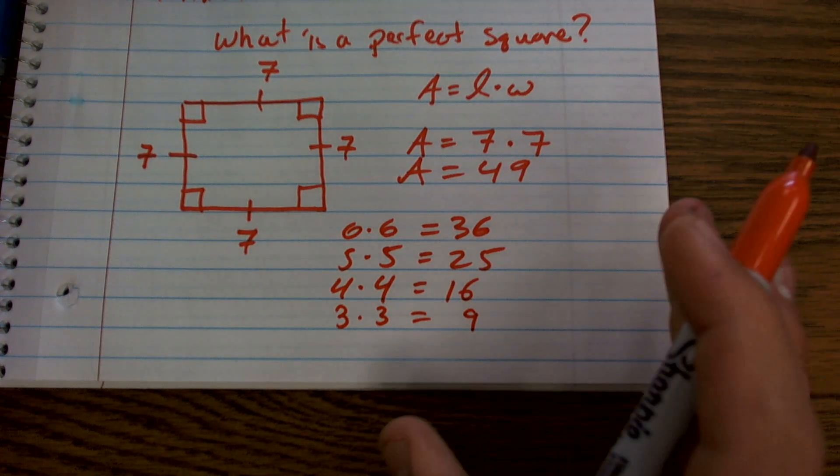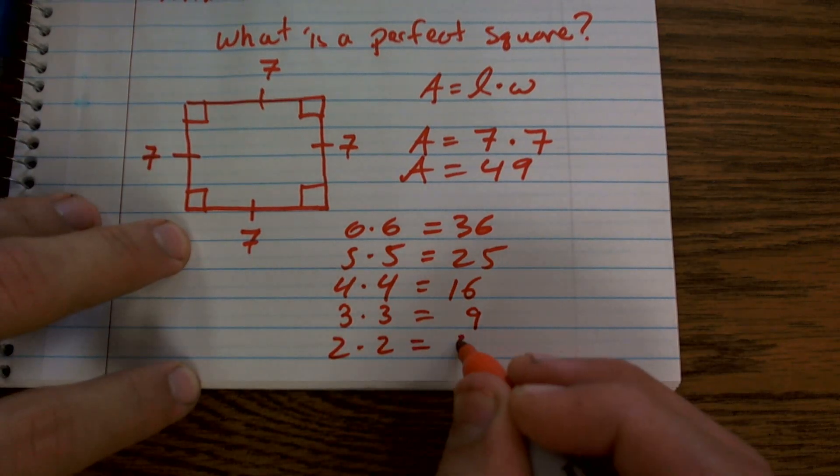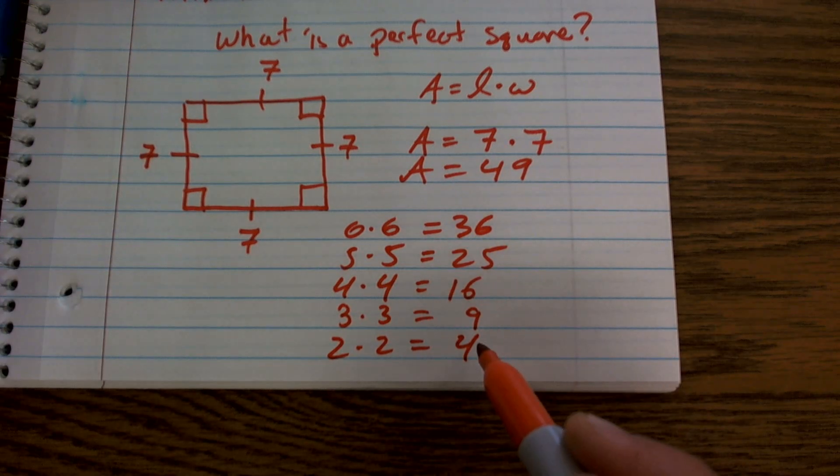Four times four equals 16. Three times three equals nine. And two times two equals four. So these are all examples of perfect squares.